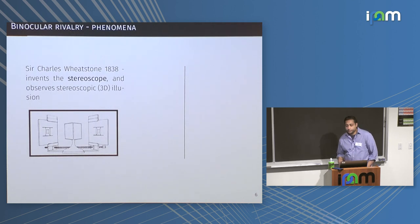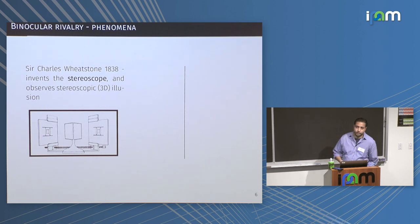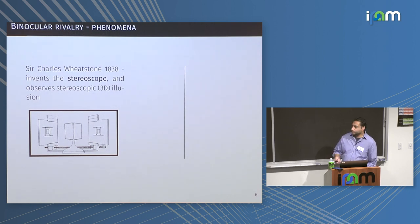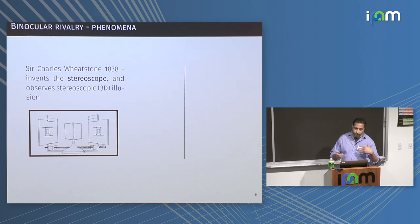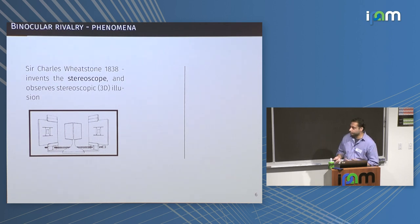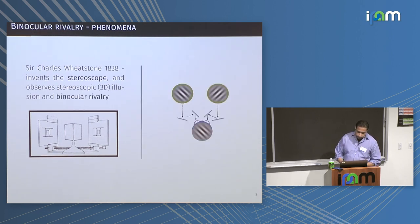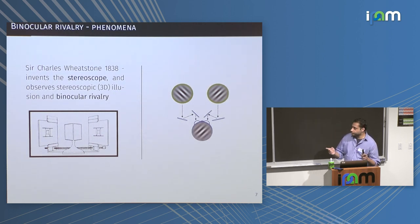Binocular rivalry has been known for many centuries, but it was probably Wheatstone, when he created the stereoscope, who really brought it into an experimental modality. He rigged up mirrors and images and showed that presenting each eye an image with a certain angle disparity gives a stereoscopic 3D illusion. He also noted that if you showed very different images to each eye, rather than getting a stable fused construct, you end up getting these alternations in perception.